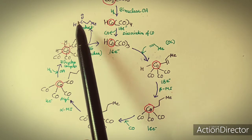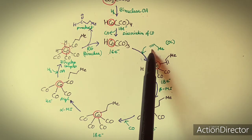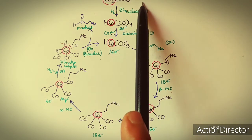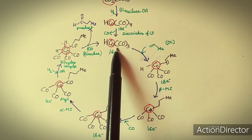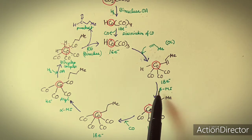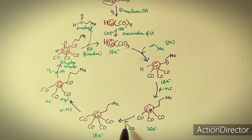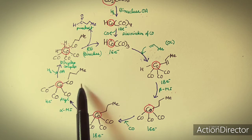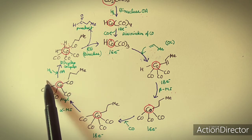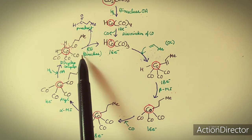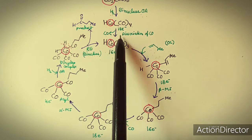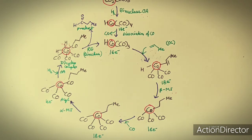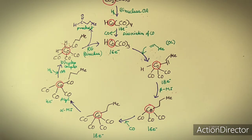This catalytic cycle generates aldehydes from olefins. The starting catalyst was Co₂(CO)₈, but the active catalyst is HCo(CO)₃, a 16-electron, oxidatively unsaturated species. The cycle involves: olefin coordination, beta migratory insertion, CO addition, alpha migratory insertion, oxidative addition of H₂, and reductive elimination. This is the homogeneous catalytic cycle of hydroformylation.